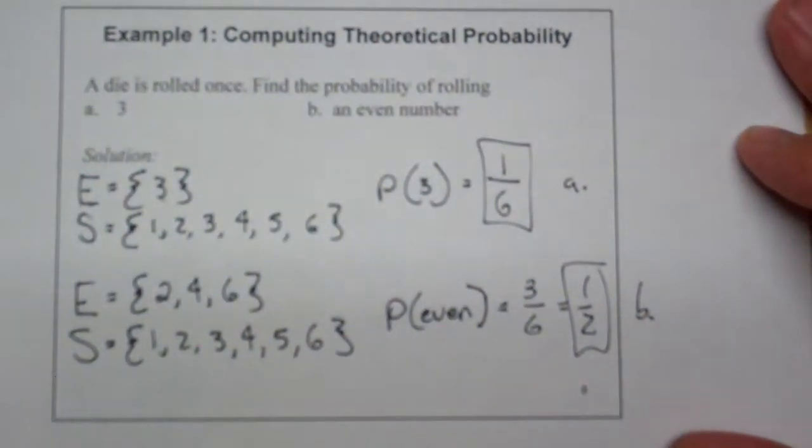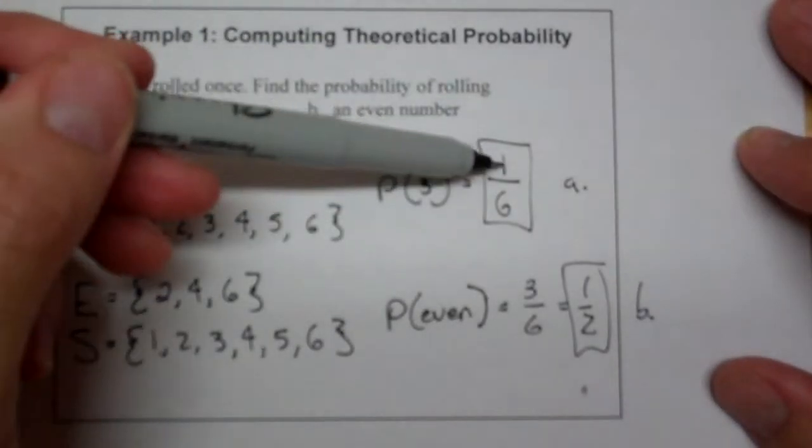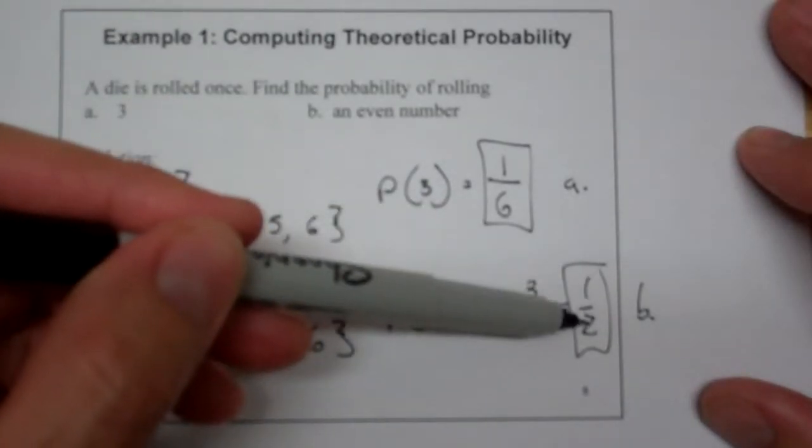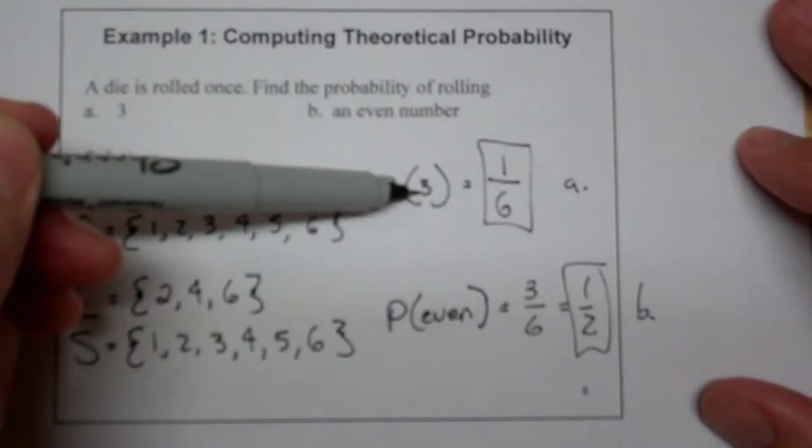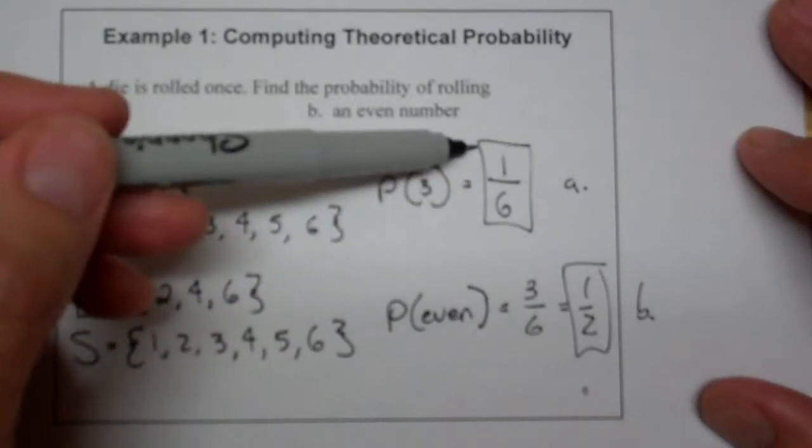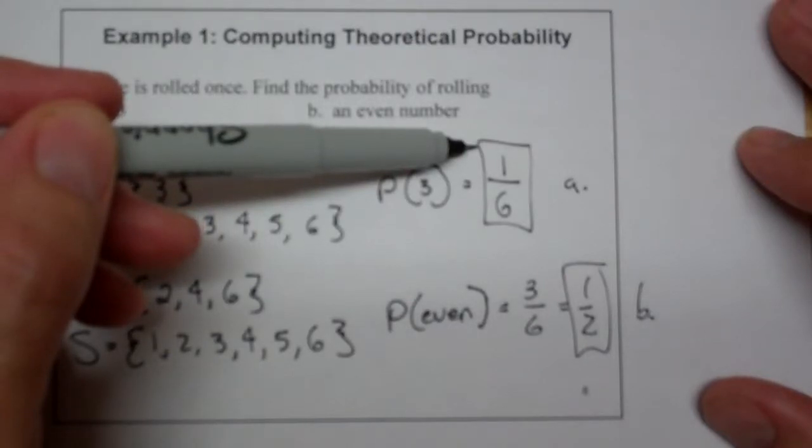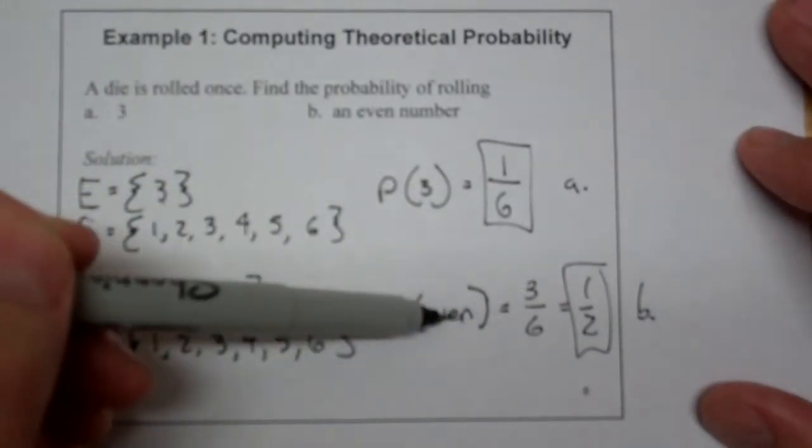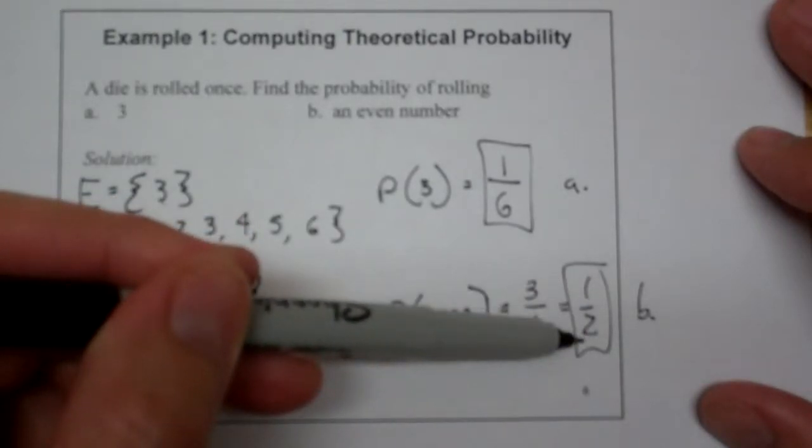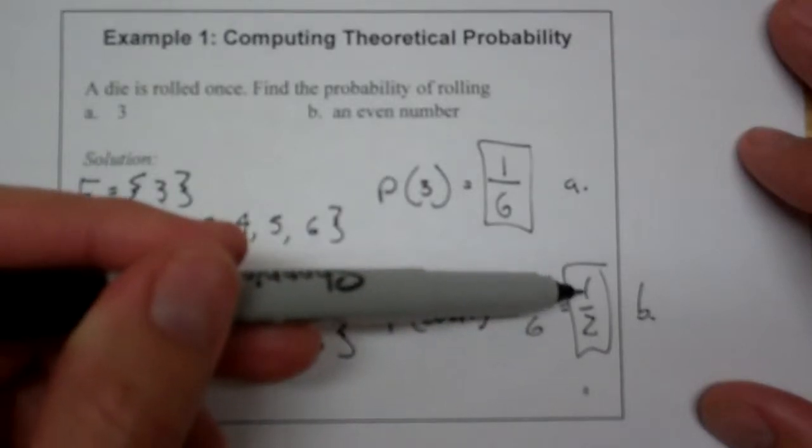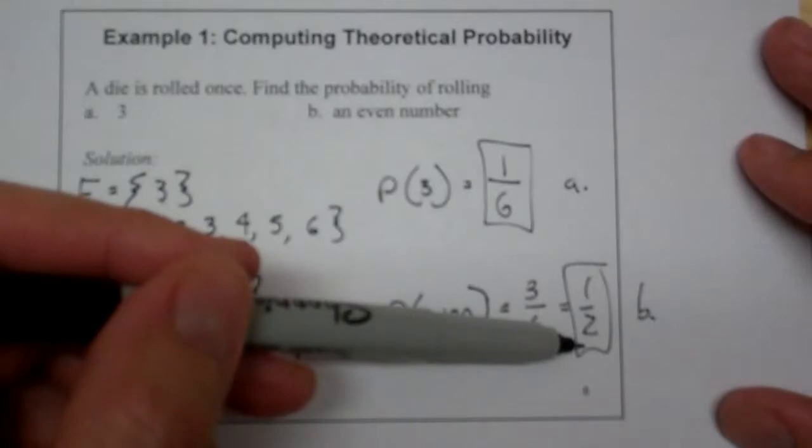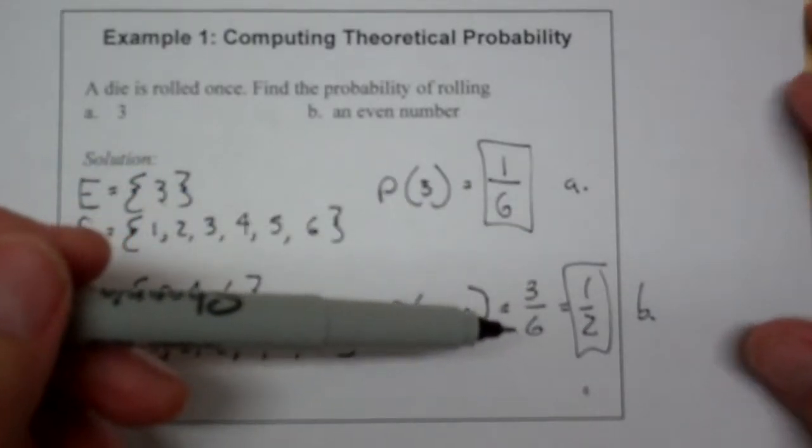Now, let's think about this for just a second. There is only one three on a six-sided dice, so this makes sense. And there are three even numbers. The even numbers represent half the die. So it makes sense that an even number would come up half the time, because it's half the die.